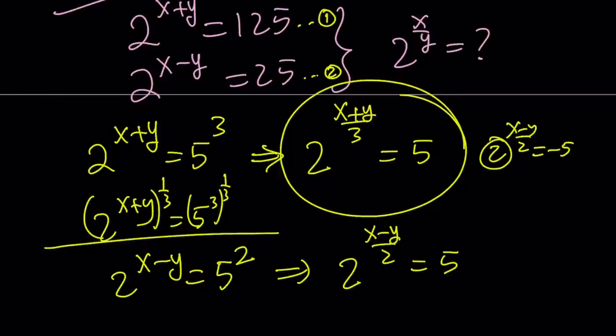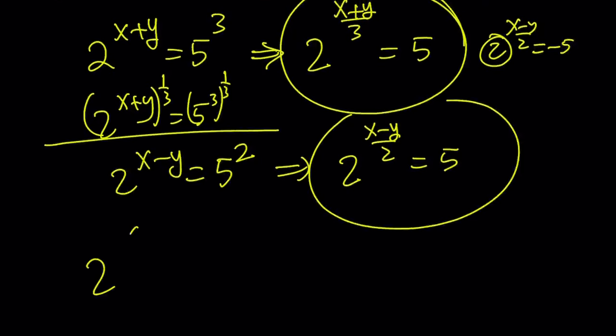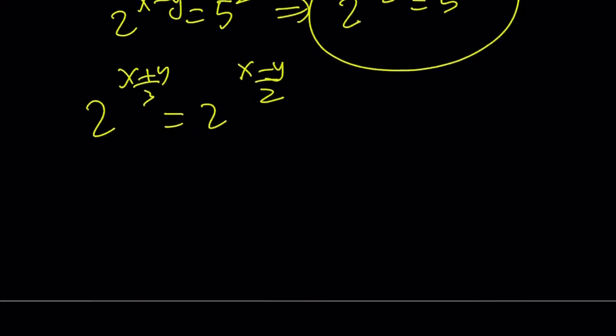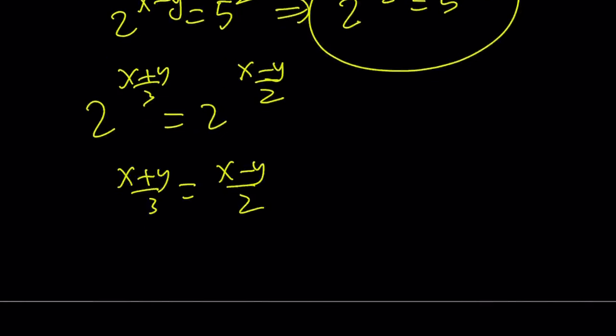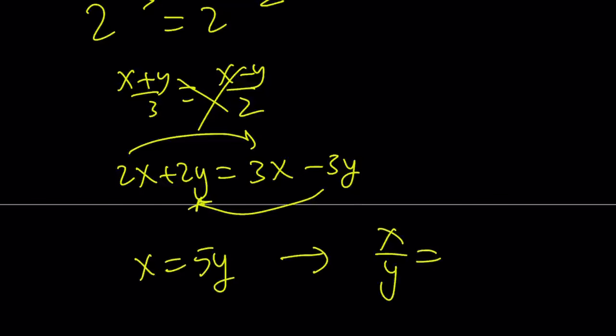So what am I getting from here? I'm getting the same thing, but I got the 5 twice. If two things are equal to the same thing, then they're equal. Which means, 2 to the power x plus y over 3 equals 2 to the power x minus y over 2. Which means, x plus y over 3 equals x minus y over 2. And now, you can cross multiply. 2x plus 2y equals 3x minus 3y. Put the x's together and put the y's together. You get x equals 5y, which means x over y equals 5.